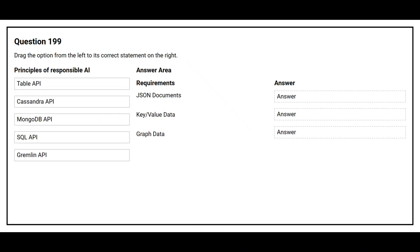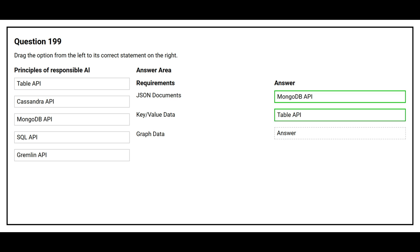Question number 199. Drag the option from the left to its correct statement on the right. The first question is JSON Documents — the correct answer is MongoDB API. The second question is Key-value data — the correct answer is Table API. The third question is Graph data — the correct answer is Gremlin API.